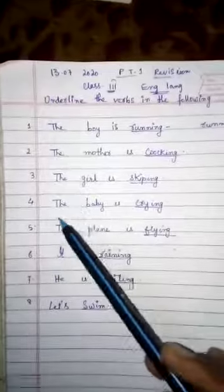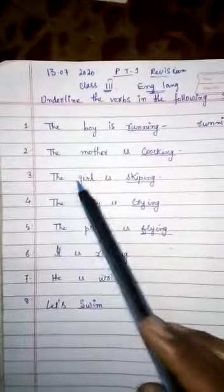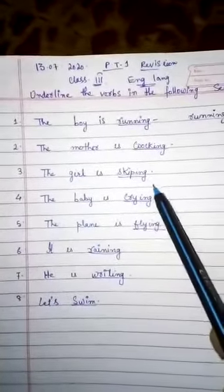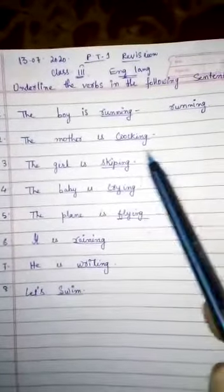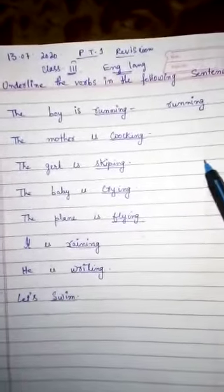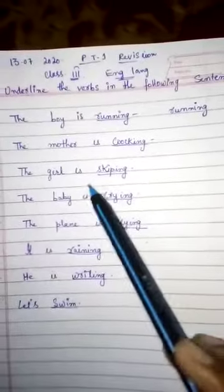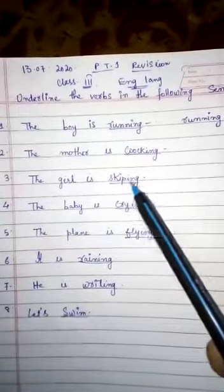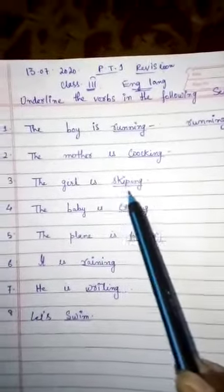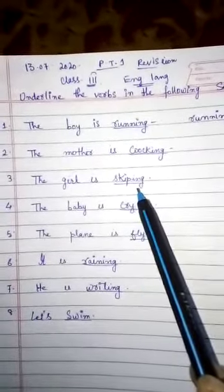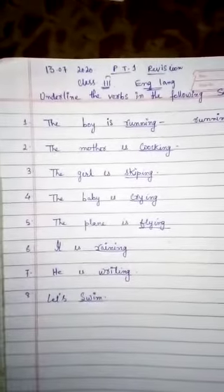I will ask the next question — for example, 'The girl is skipping' — the answer will be: skipping. When I ask what is the verb, you have to say the verb is skipping. Just like that you have to do. Thank you, be prepared for the PT1 test.